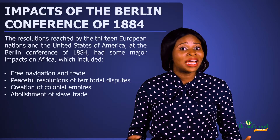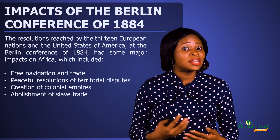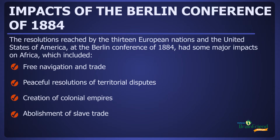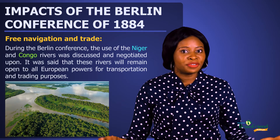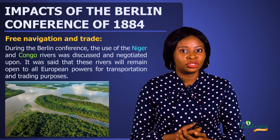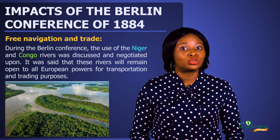Let's look at the impact of the Berlin Conference on Africa. Some of the impacts include free navigation and trade, peaceful resolutions of territorial disputes, creation of colonial empires, and the abolishment of slave trade. Starting with free navigation and trade: during the Berlin Conference, it was agreed that the rivers Niger and Congo be free for navigation and trade to all European nations, meaning no European nation could lay exclusive claim to these rivers but rather everyone was allowed to make use of them.